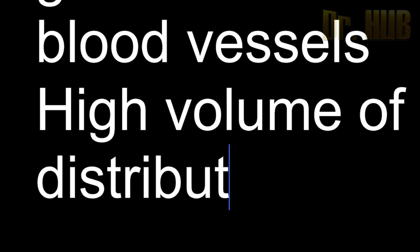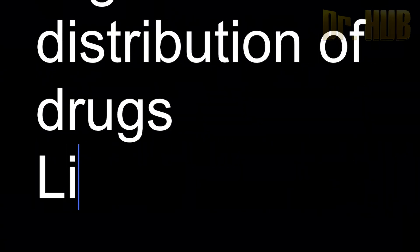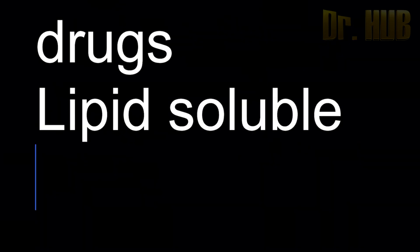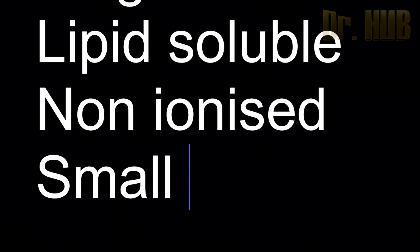The properties that make the drug go out of the blood vessels — this is known as high volume of distribution drugs. It will be lipid soluble, it is non-ionized, and it is small size or low molecular weight. There are also tissue protein bound drugs.